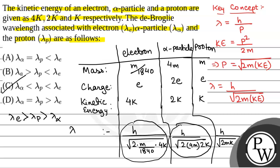So the correct option will be option C — lambda E is greater than lambda P is greater than lambda alpha. Hope you all understood it well. Best of luck.